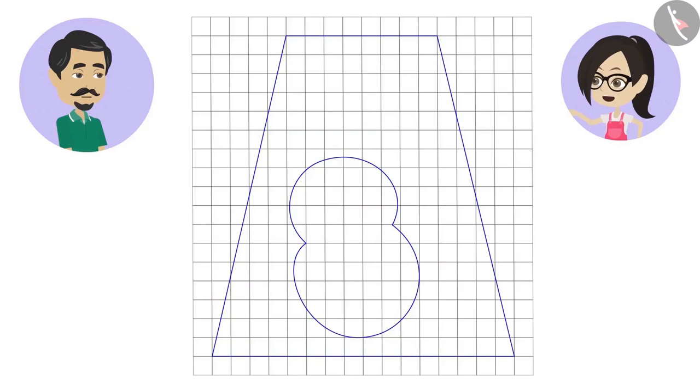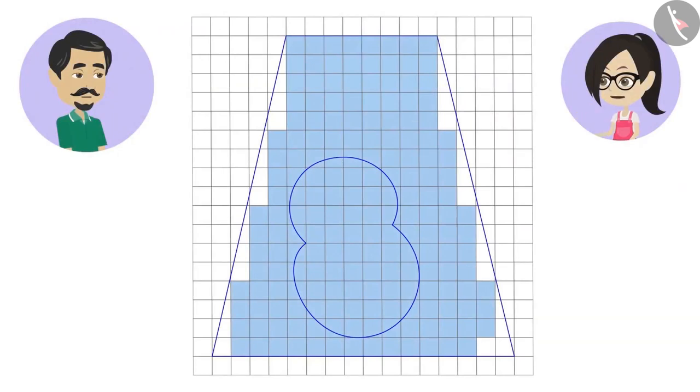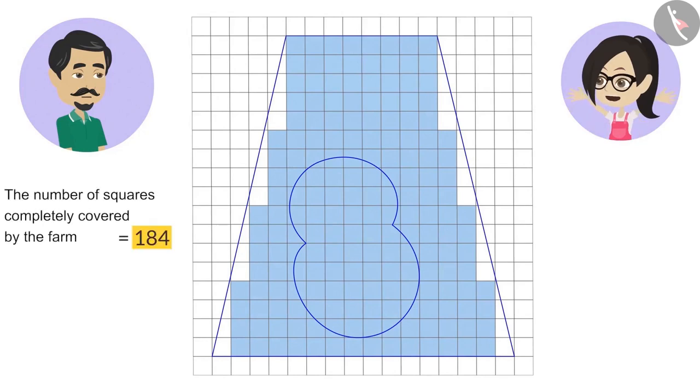This farm is covering some squares completely. First, count them. One, two, three, four... 183, 184. The number of squares completely covered by the farm is equal to 184.